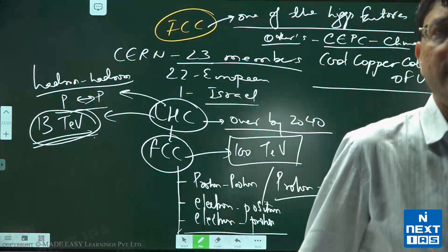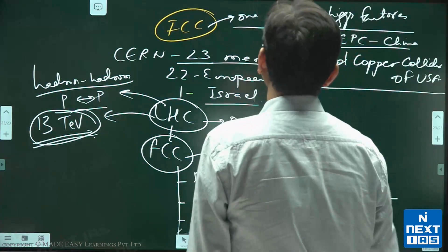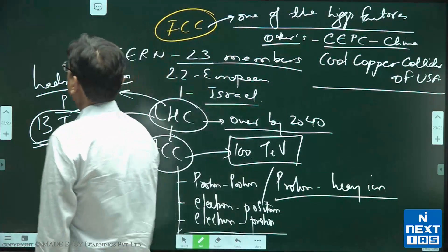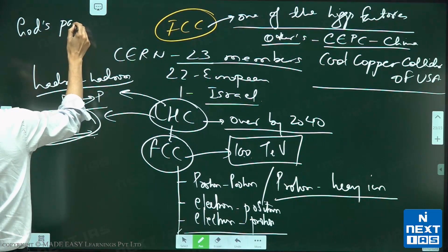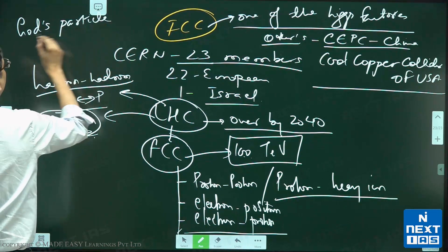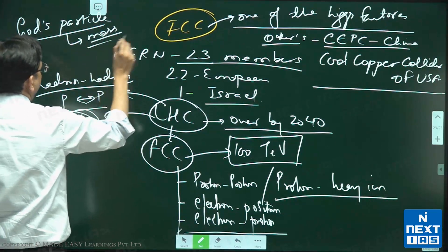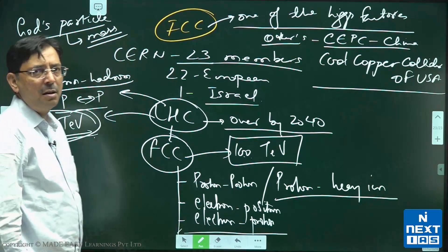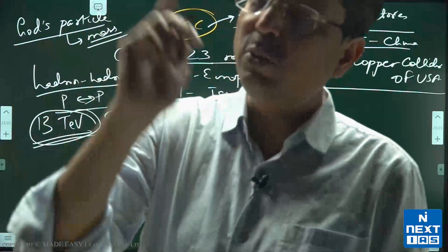These Higgs factories will produce Higgs boson in huge numbers. Higgs boson is famously known as God's particle. It is responsible for imparting mass, and Higgs boson is the only known particle...